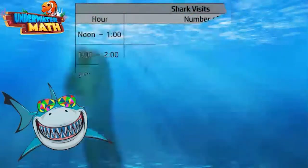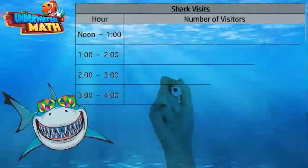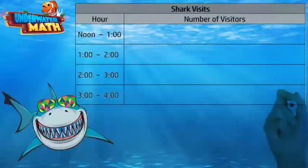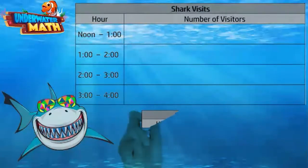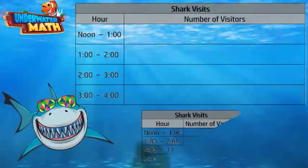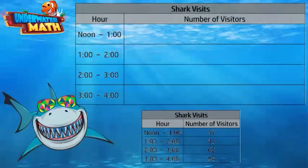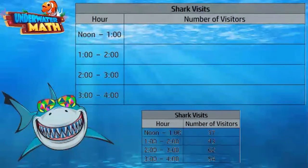Now let's look at a list and create a frequency table from the data. We'll use a list of how many people viewed the shark exhibit at the aquarium every hour yesterday afternoon. Only 37 people came at noon — the others must have been eating lunch.